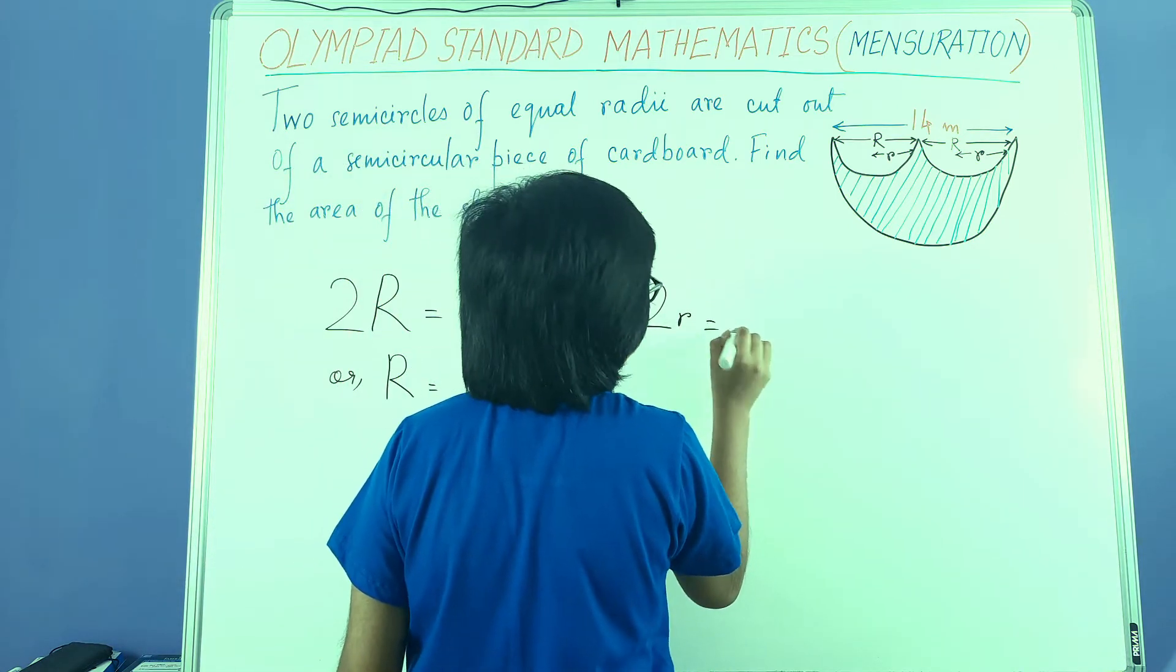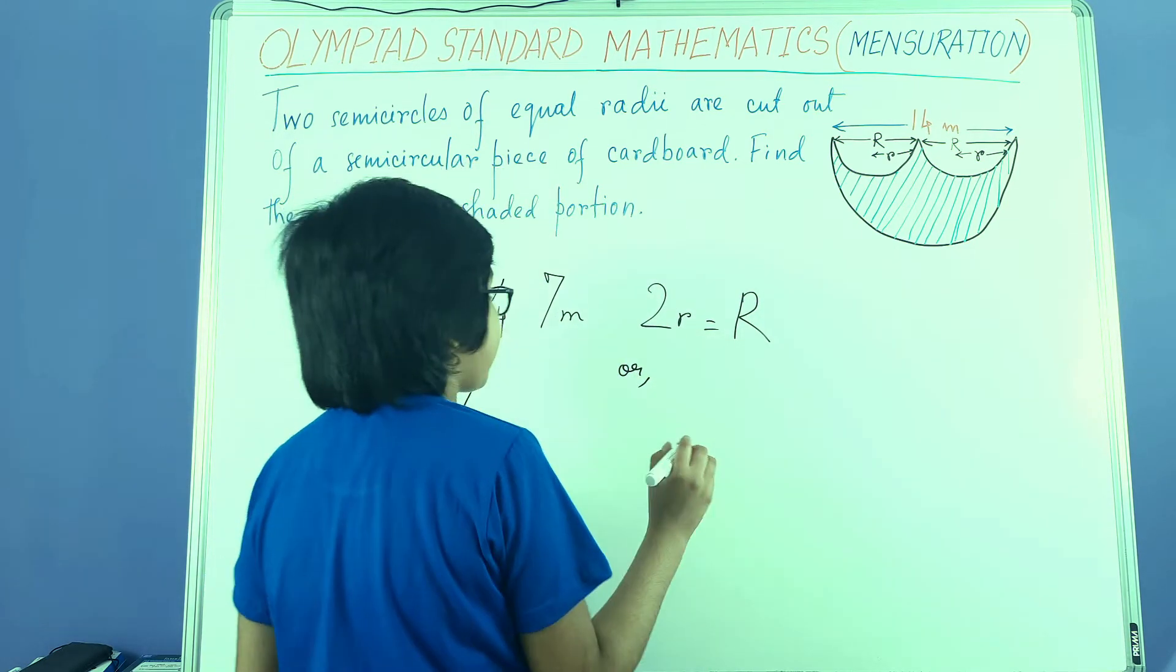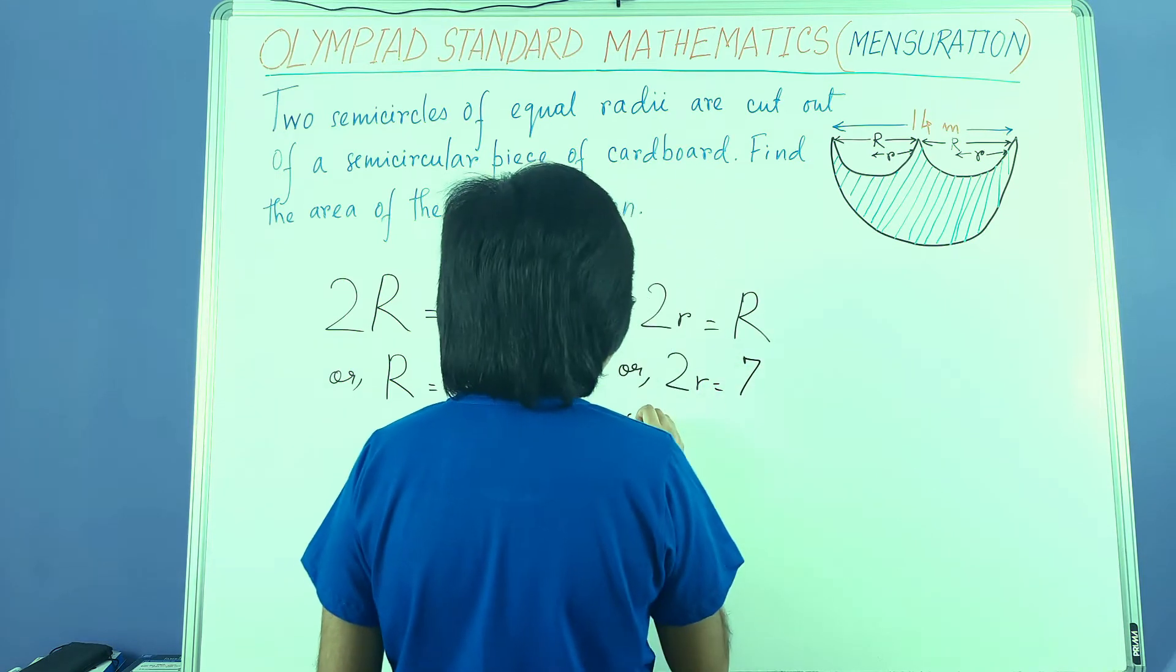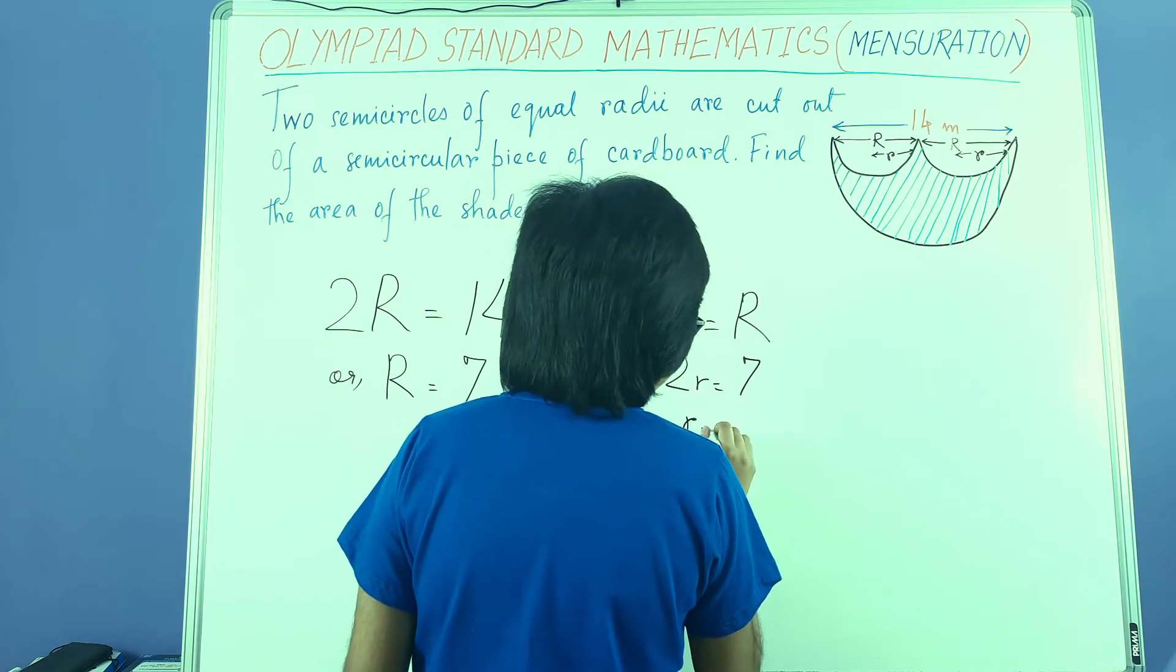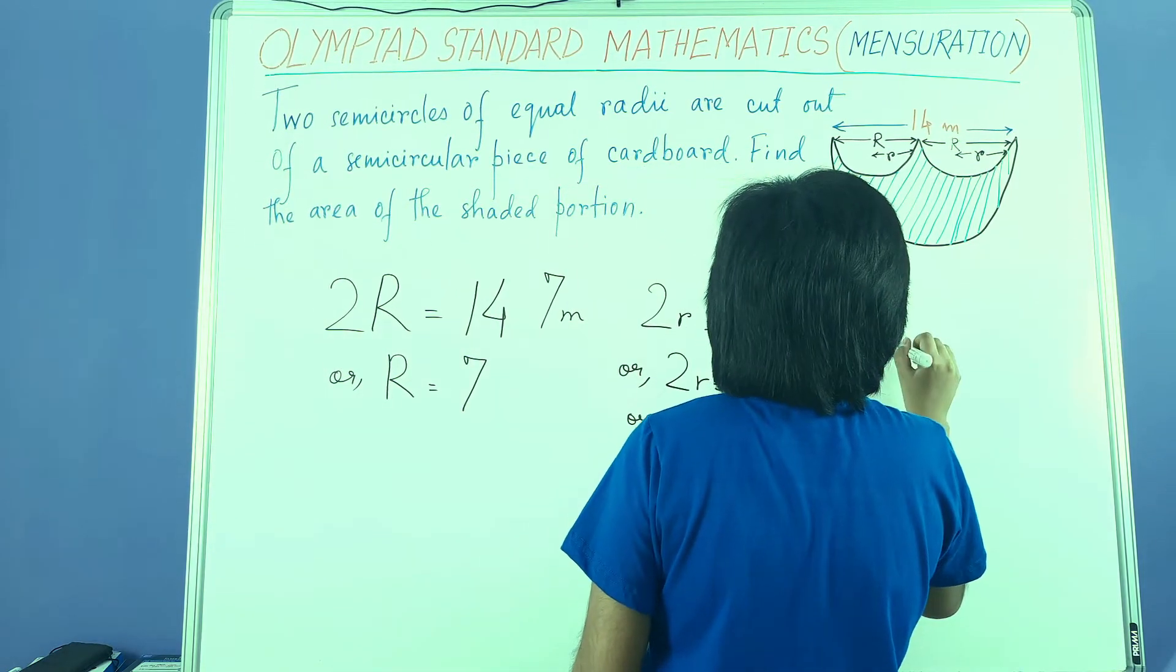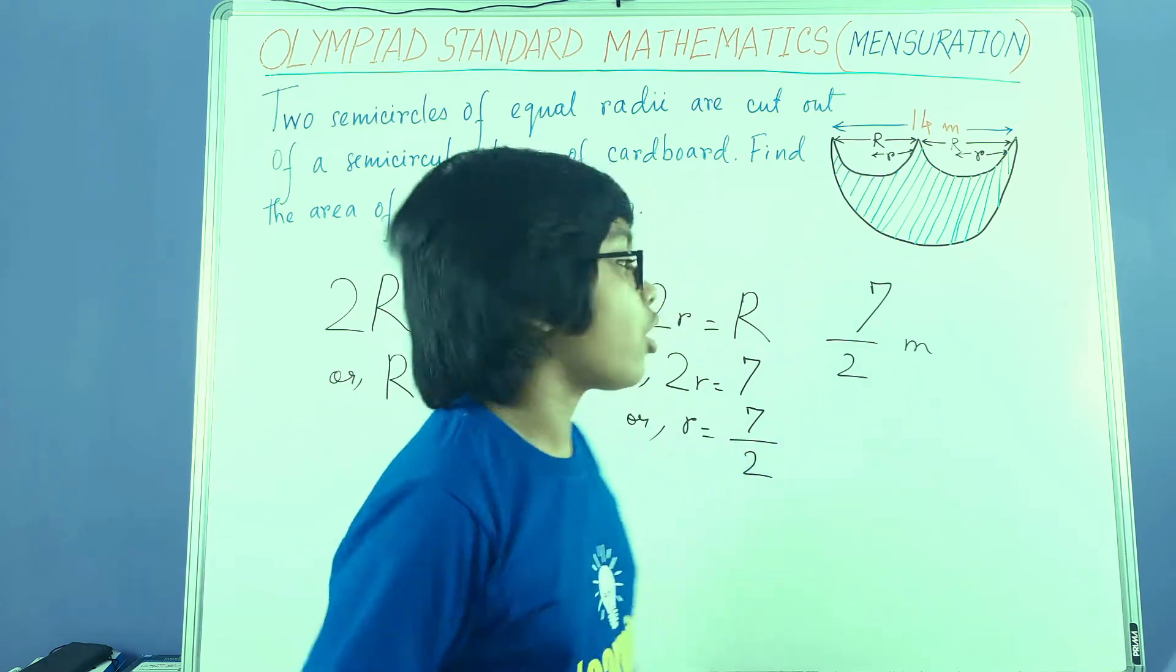2 into small r equal to capital R. Capital R's value is 7, so 2 into small r equal to 7, or small r equal to 7 by 2. So 7 by 2 meters is the radius of the small semicircles.